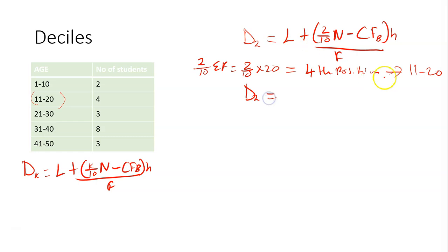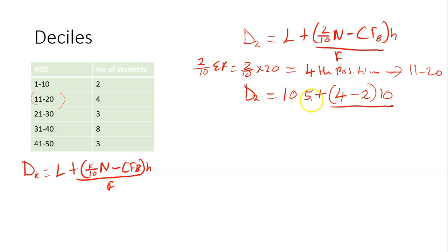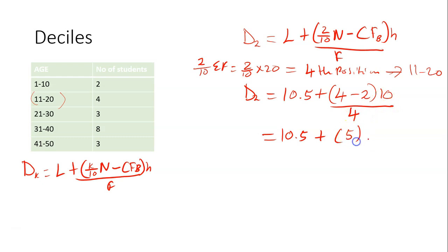To get the second decile, L means the lower class boundary of the second decile class, which is 10.5. Plus, into brackets, 2 over 10 times N is 4. Minus CFB — the cumulative frequency that comes before that class, which is 2. Times H, which is 10. Divided by the frequency of the second decile class, which is 4. So we have 10.5 plus — 4 minus 2 is 2, times 10 is 20. Divided by 4 is 5.